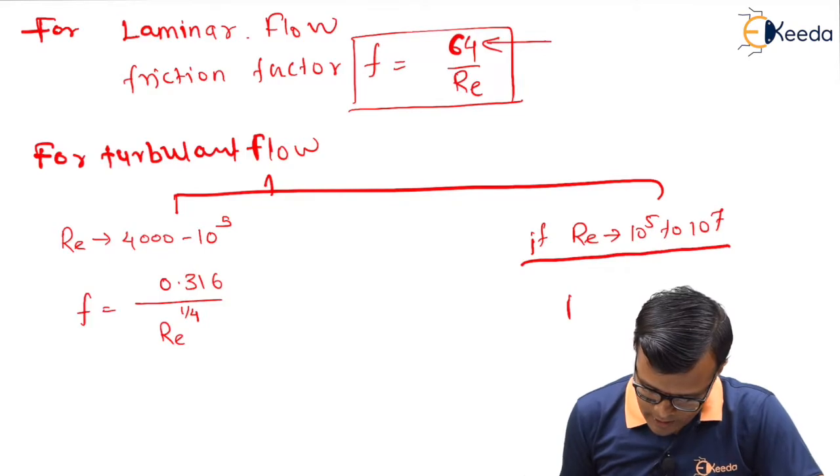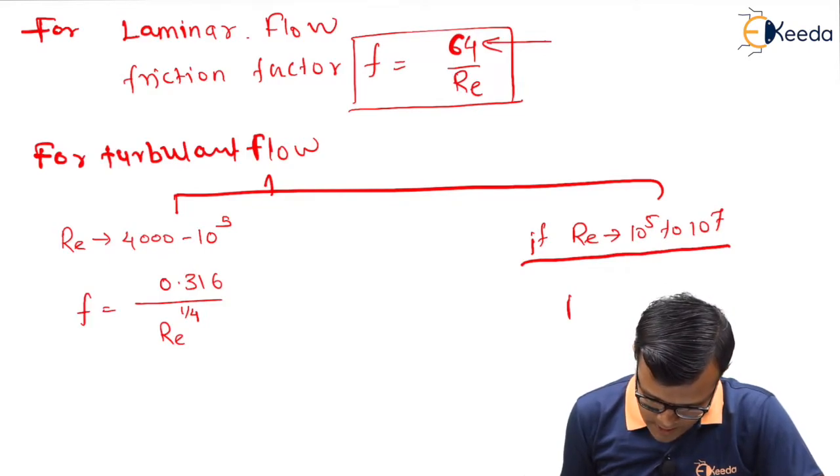But now if we increase the Reynolds number in further relation, if Re changing from 10 raise to 5 to 10 raise to 7, then the relation used is u average upon u star is equal to 5.75